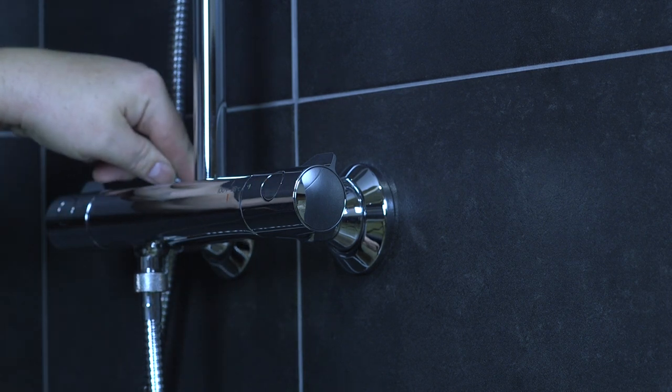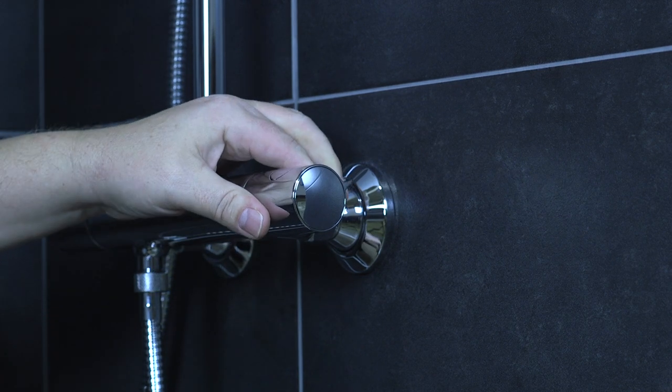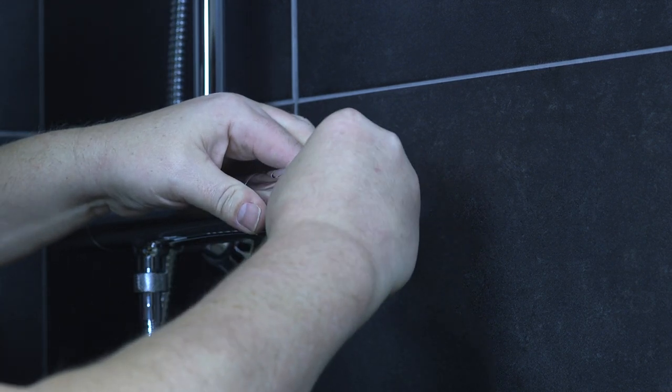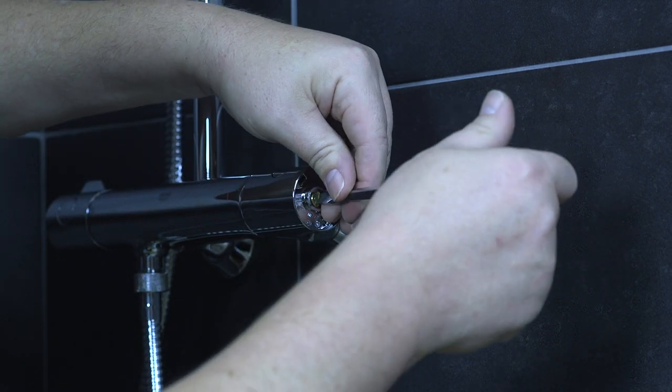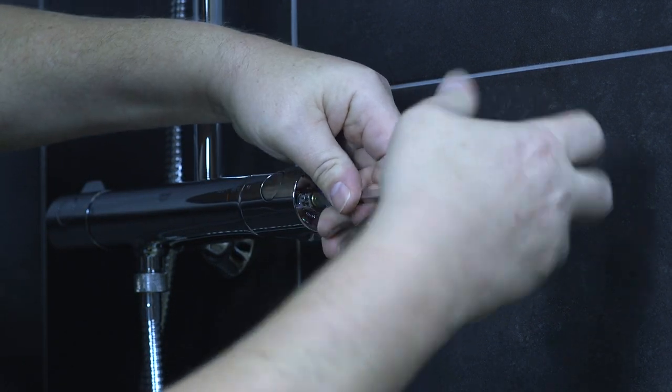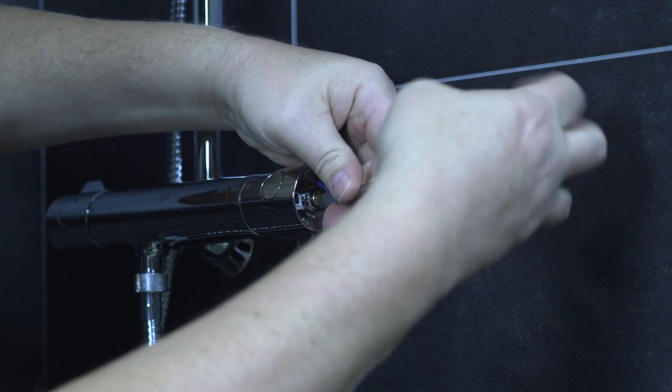So we would start off with setting off the service stops so no water to the valve. This cap simply snaps out with a regular blade screwdriver, then remove the handle.